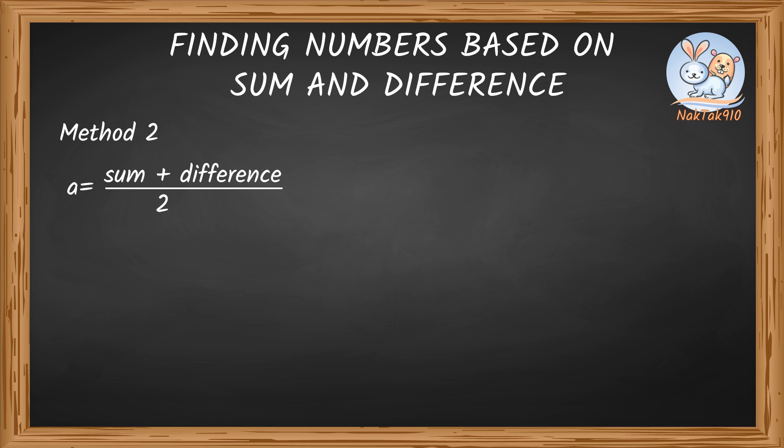Let's see if this works. Here's an example. Find two numbers whose sum is 82 and difference is 60. Let those two numbers be a and b.